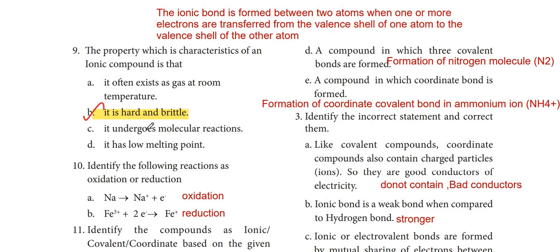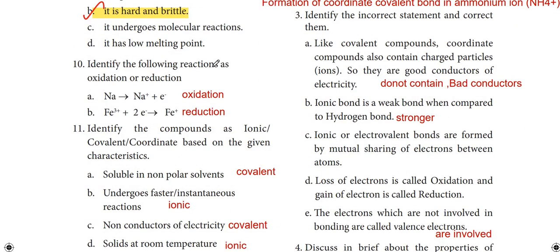Ninth question: the property characteristic of an ionic compound is that it is hard and brittle. Tenth question: identify the following reactions as oxidation or reduction. Na → Na+ + e⁻ is an oxidation reaction because it loses an electron. The second reaction involves electron gain, so it is a reduction reaction.